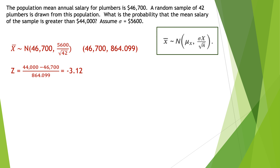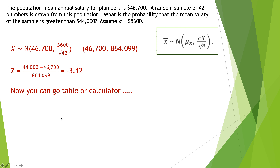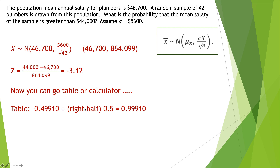The z-score: the problem asks what's the probability the salary is greater than $44,000, so I need the area under the curve for greater than $44,000. It's going to be negative because $44,000 is less than the mean. I get negative 3.12. Then I go to the table — looking up negative 3.1 on the left column and 0.02 across the top — I get 0.49910, then add the right half of 0.5, giving 0.99910.